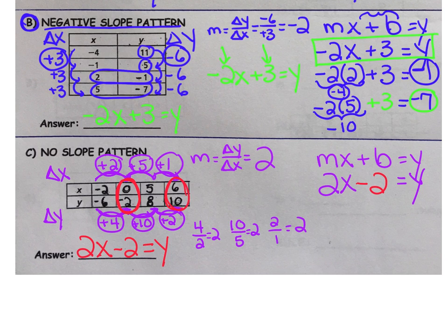Okay, let's check this pair. We could have selected any pair. But, 2 times an X of 6, well, this gives us 12. Take away 2. 12 take away 2 is indeed a Y of 10. It checks out. Now complete page 11.